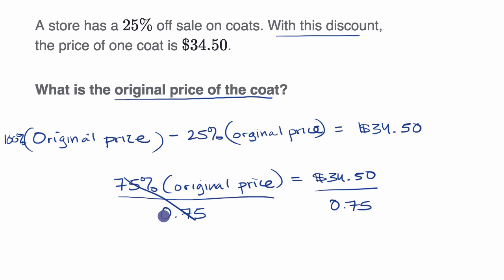On the left-hand side, these cancel out, so I'll be left with my original price. Now I just have to figure out what this is going to be. If I take 0.75, let me actually multiply both of these by 100. So this is the same thing as 3,450 divided by 75. I just did that to get rid of the decimals—I moved both decimals to the right two places, multiplying the numerator and denominator by 100.